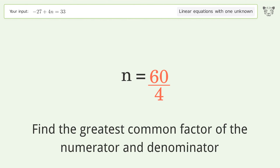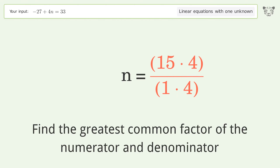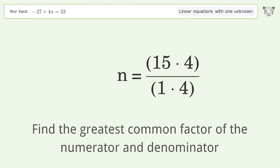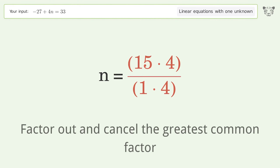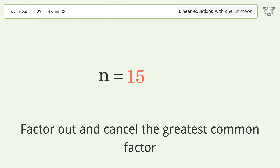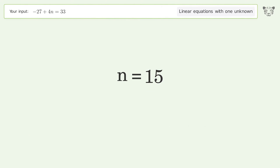Find the greatest common factor of the numerator and denominator, then factor out and cancel the greatest common factor. And so the final result is n equals 15.